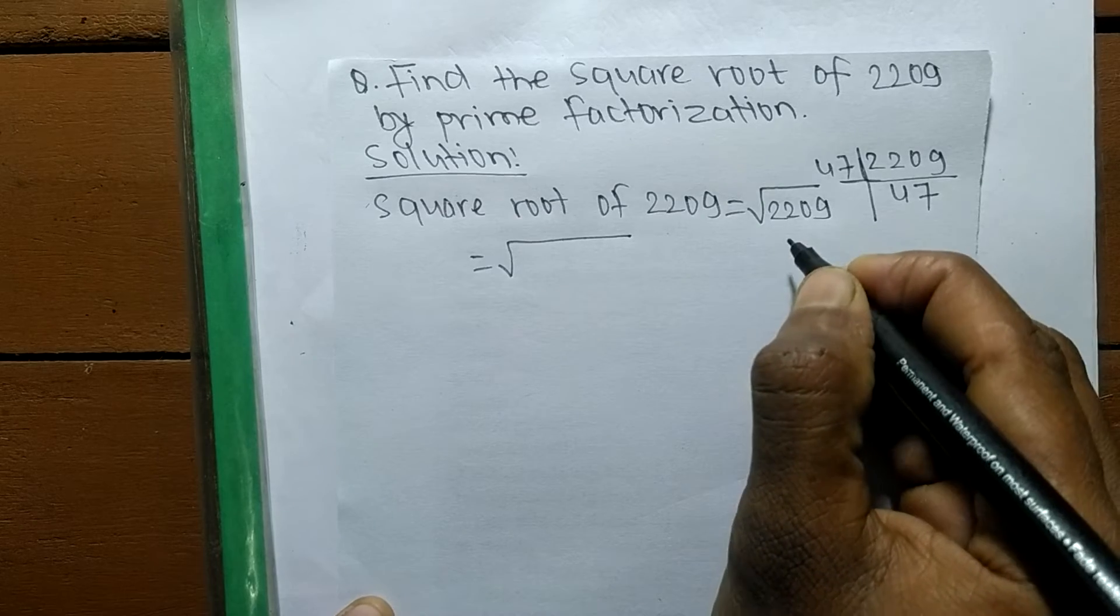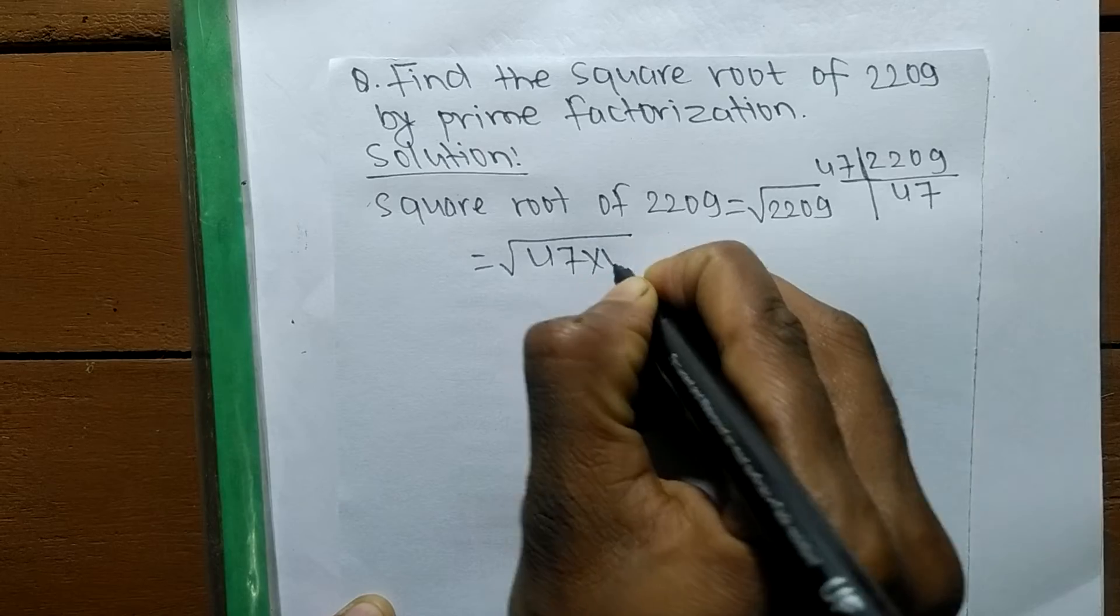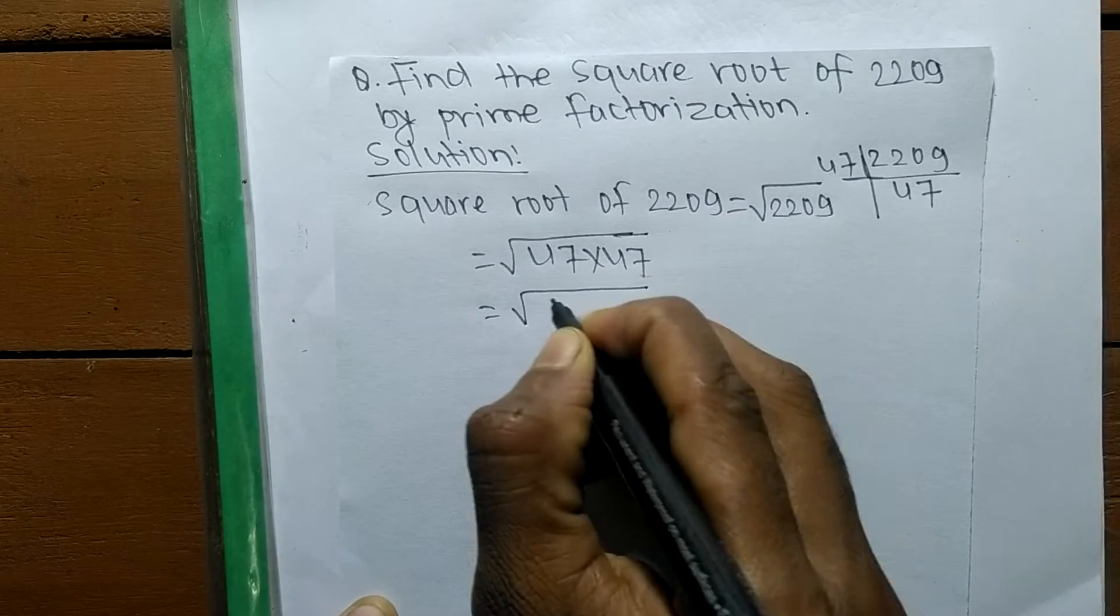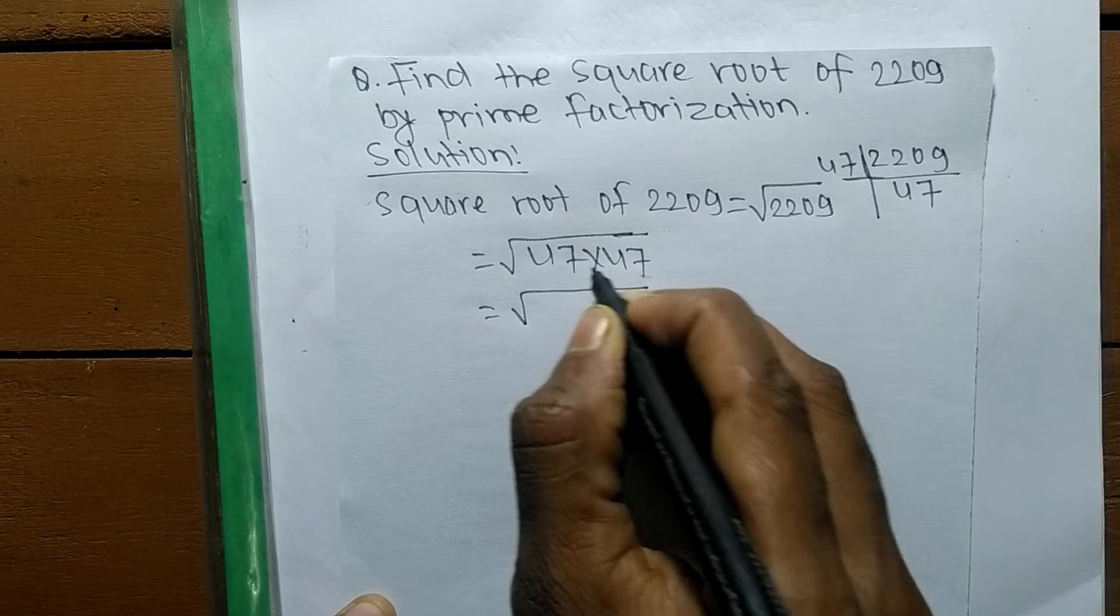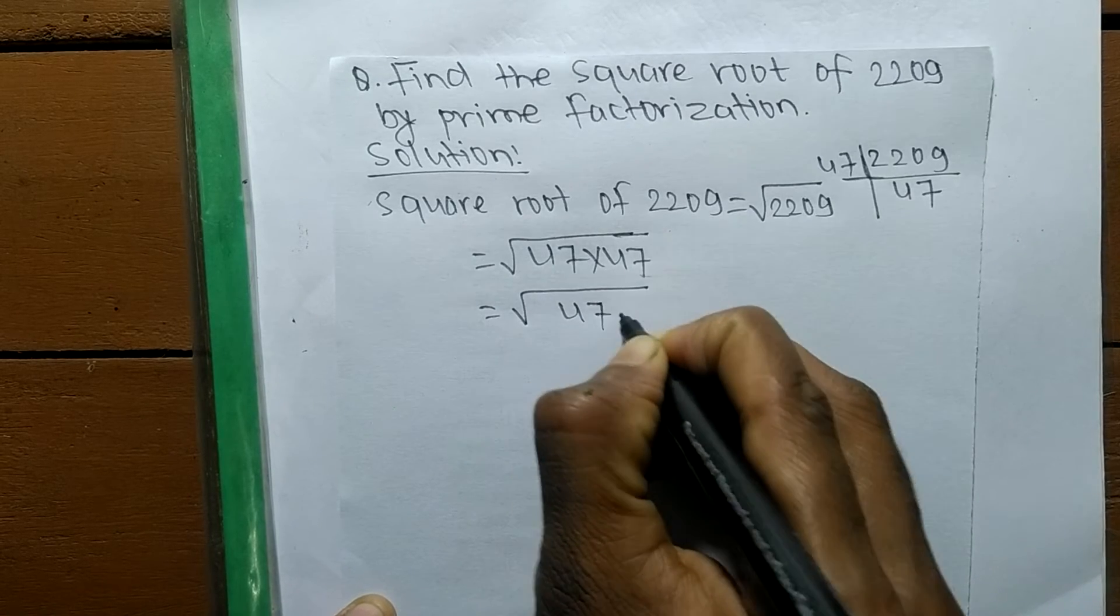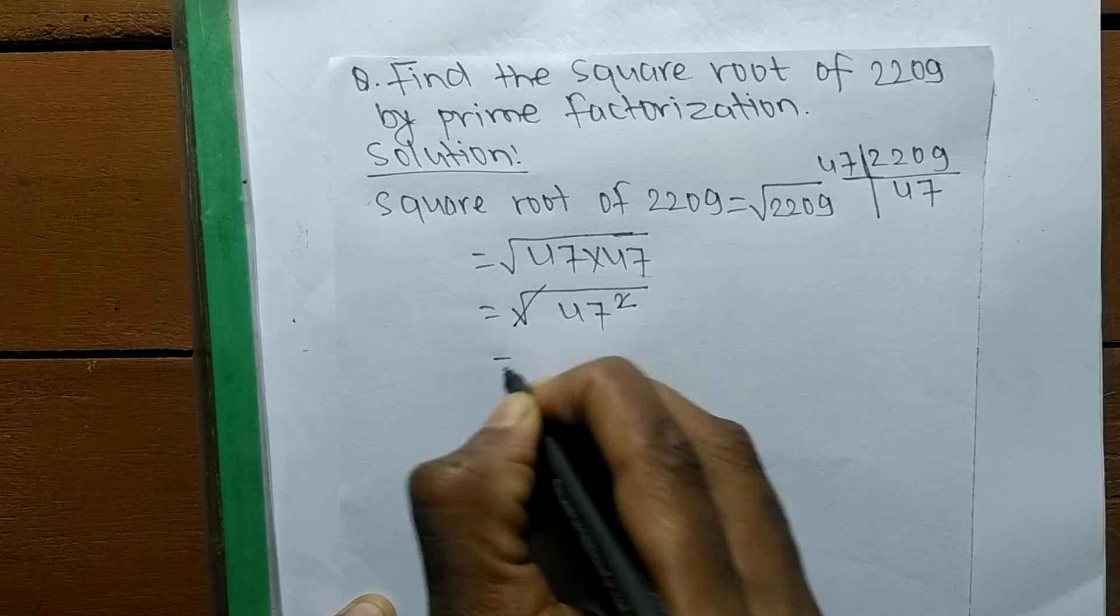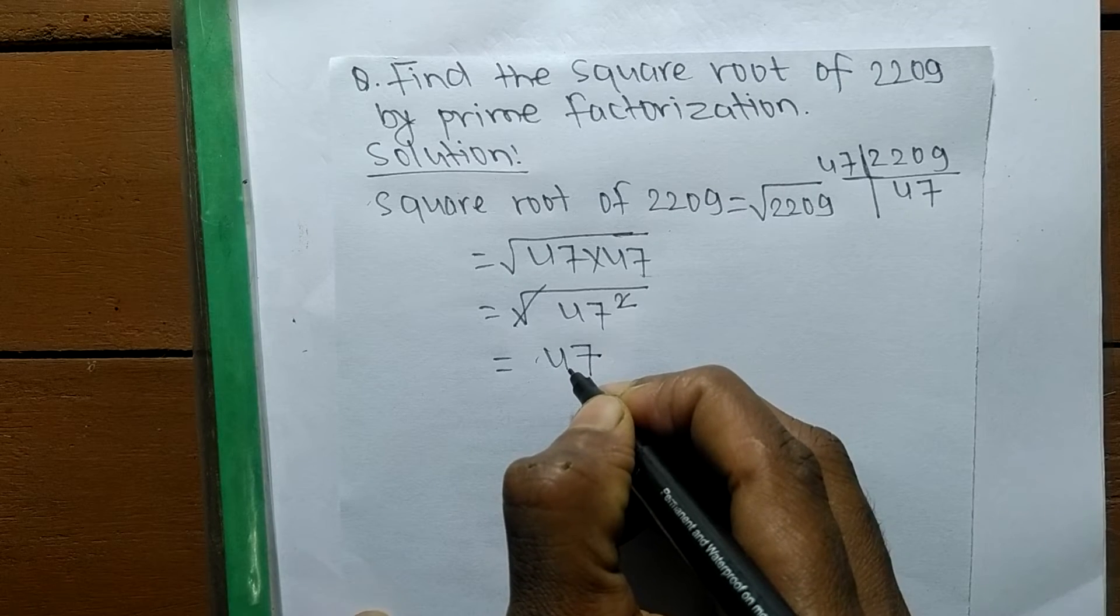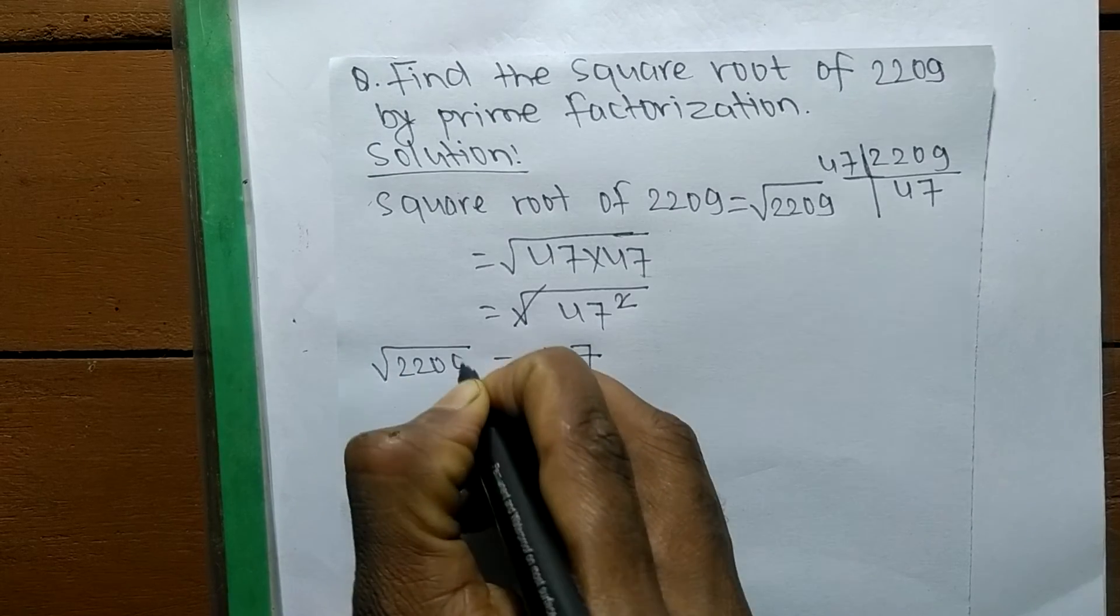We write the prime factors of 2209, which is 47 times 47. Now we have to make the square of these numbers. 47 times 47 means it is 47 squared. A square and a square root cancel each other, so 47 comes out of the square root.